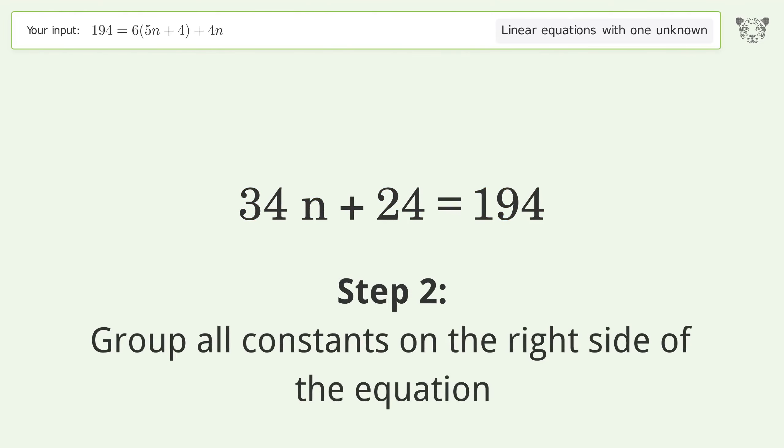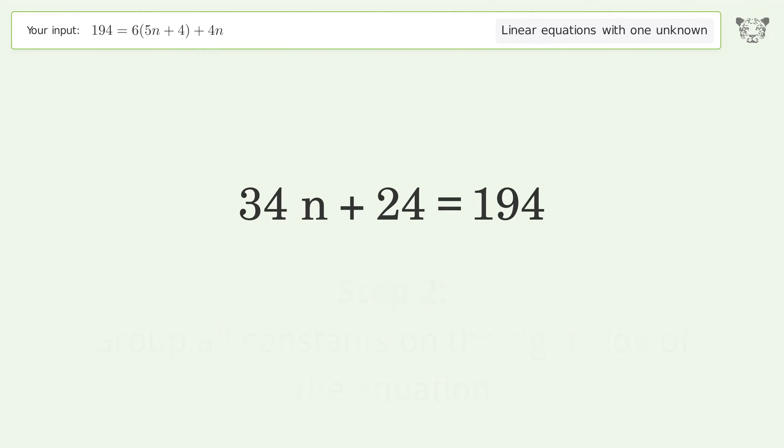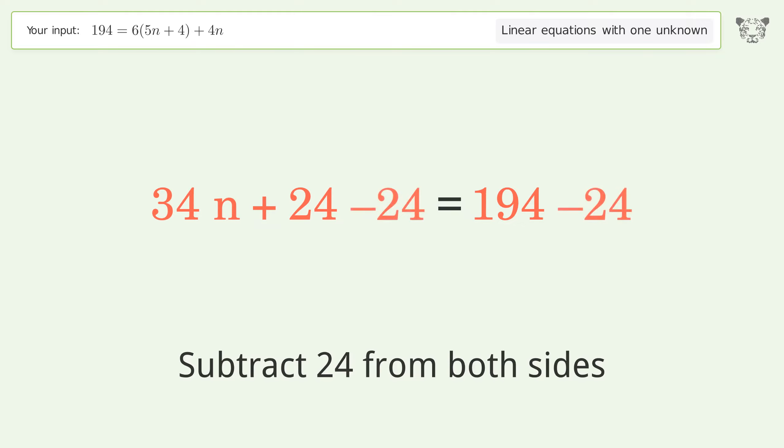Group all constants on the right side of the equation. Subtract 24 from both sides. Simplify the arithmetic.